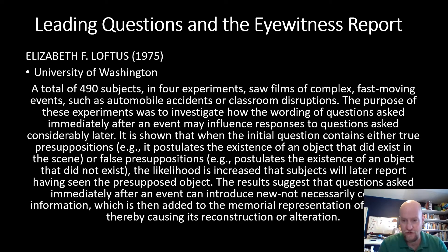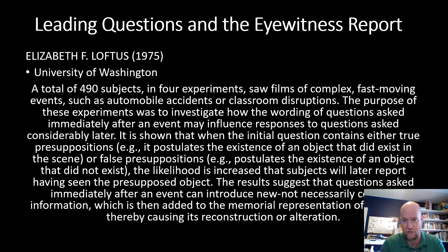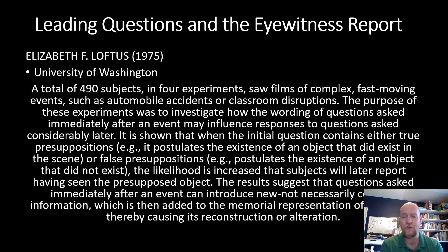The Elizabeth Loftus article covers not just one experiment — it's a summary of four experiments with a total of 490 subjects across the four. In each of the examples, subjects are shown a film of a complex, fast-moving event, for example an automobile accident, which is the classic example she often uses, or a classroom disruption. The purpose of the experiments was to investigate how the wording of questions asked immediately after an event influenced people's responses — and in some cases, considerably later.